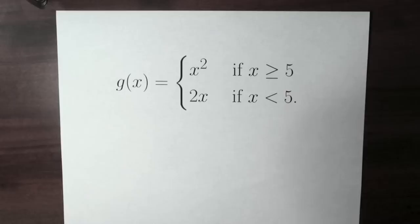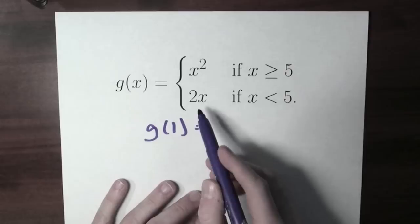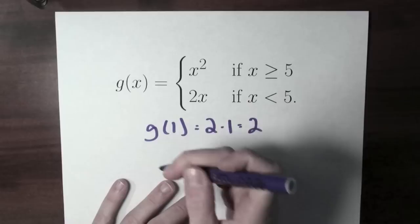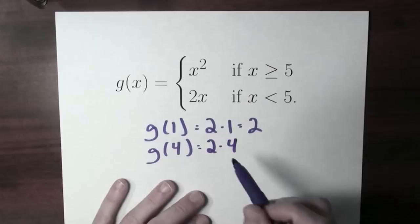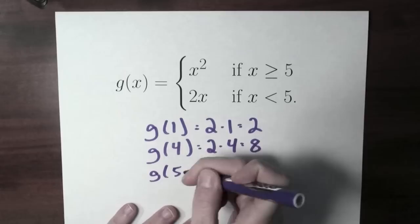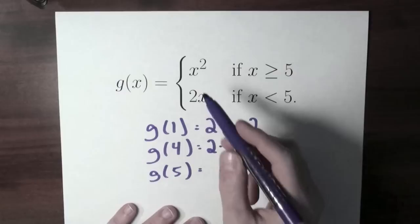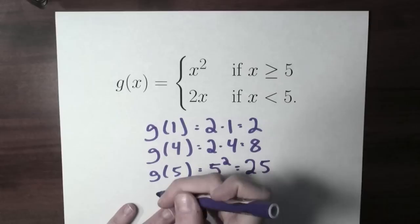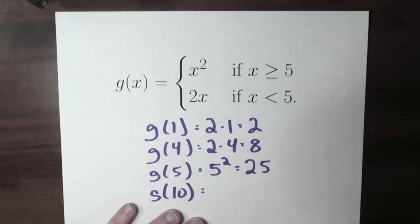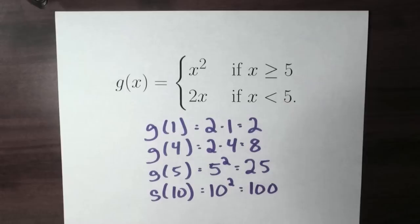What is g of 1? Well, 1 is less than 5, so I use the second rule: 2 times 1, which is 2. What's g of 4? 4 is still less than 5, so I use the second rule again: 2 times 4, so the output is 8. What's g of 5? 5 is not less than 5 — it's greater than or equal to 5 — so I use the first rule: 5 squared, which is 25. Or g of 10: 10 is bigger than 5, so the output is 10 squared, or 100. I'm using these if statements to select which of the two rules g will use to compute its output.